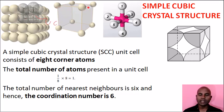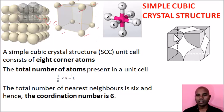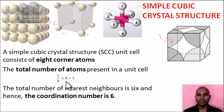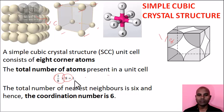If we solve the unit cell, this is a unit cell. We will look at the corner — first, we have 8 atoms. Each corner atom is shared, so 1/8 per unit cell. 1/8 into 8 atoms equals 1. Total number of atoms in simple cubic is 1.